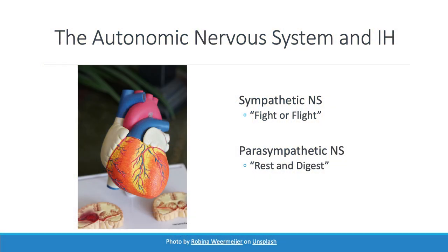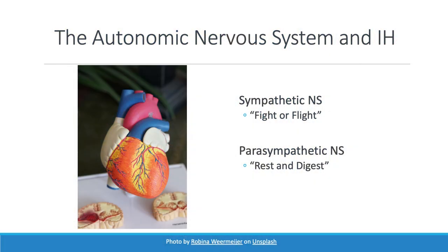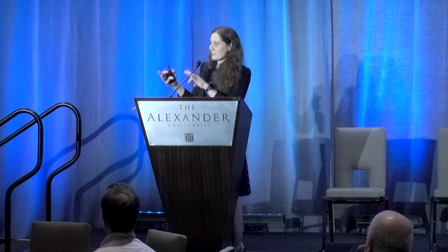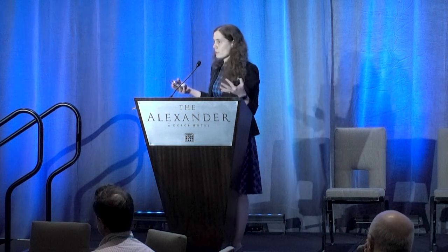The autonomic nervous system is the part of the nervous system that keeps your body running in the background. It's divided into two arms: the sympathetic nervous system — commonly called the fight-or-flight system — increases heart rate and breathing rate when you're threatened. The parasympathetic nervous system, often called the rest-and-digest system, handles recovery. The balance between these systems at any given time changes pretty fundamentally in non-REM sleep, REM sleep, and wakefulness.